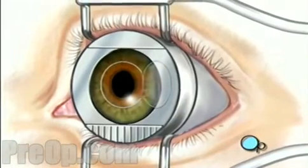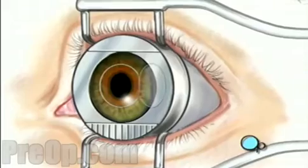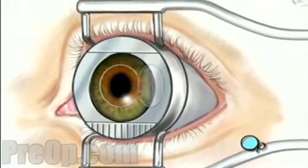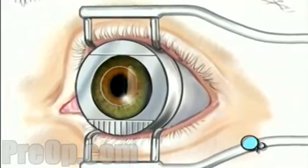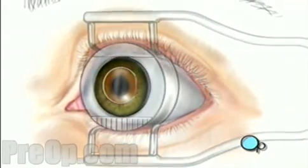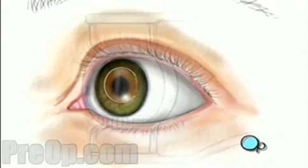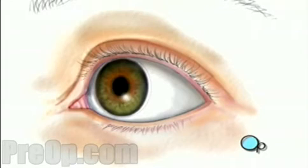The entire procedure usually takes about five minutes and is painless. The corneal flap is then closed and the surface is rinsed. Following the surgery, you'll be given protective contact lenses to wear for a few days while the corneal flap heals.